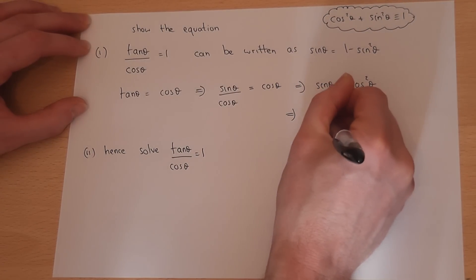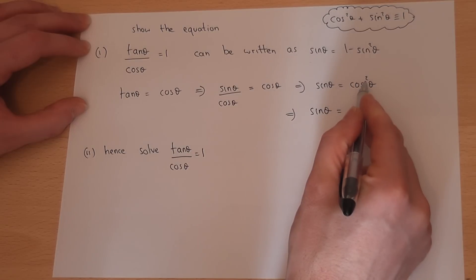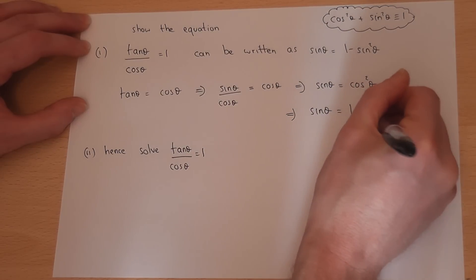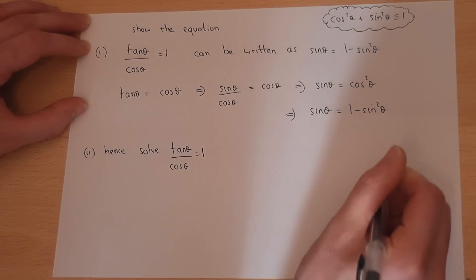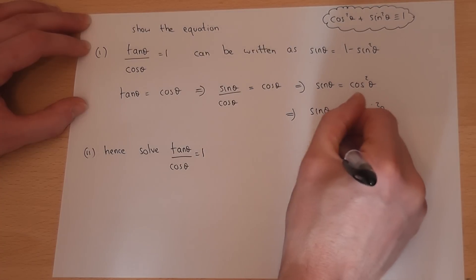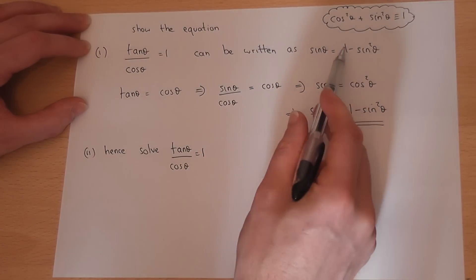So if I substitute that into my equation, cos squared equals 1 minus sine squared theta. I've therefore shown the required result.